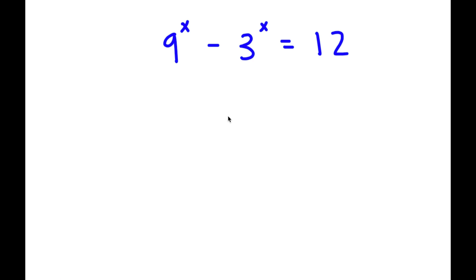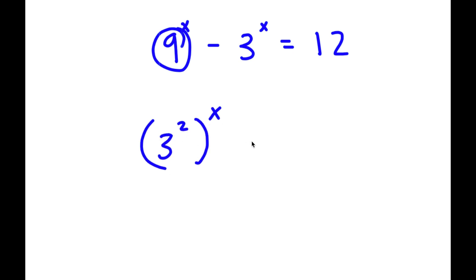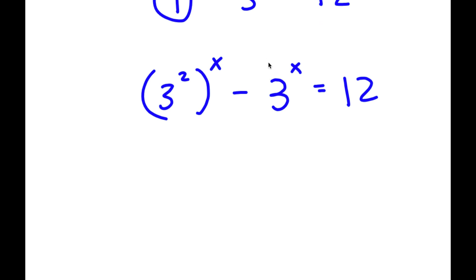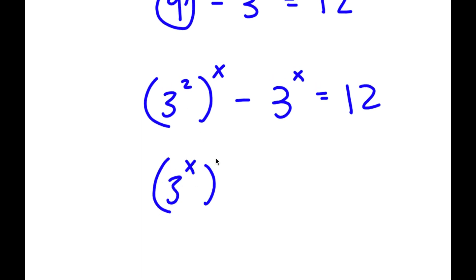So in this problem, I have 9 to the power of x minus 3 to the power of x is equal to 12. To solve this, I'm going to first rewrite 9 as 3 squared. So now I have 3 squared to the power of x minus 3 to the power of x is equal to 12. I'm going to rewrite 3 to the power of 2 to the power of x as 3 to the power of x to the power of 2.